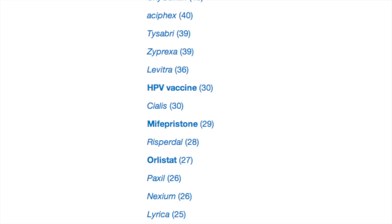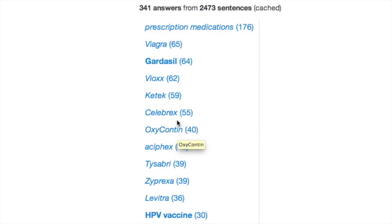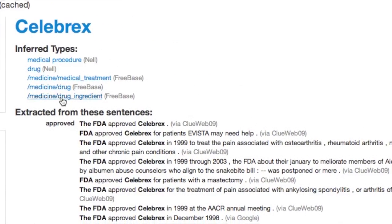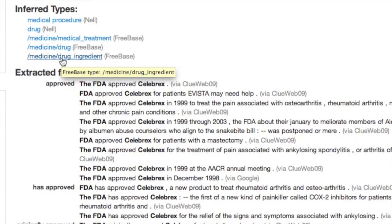However, in this list, many of these entities like Celebrex are not the entities that it was able to map to Freebase. However, it still knows that these are drugs, and that is because of its type inference algorithm.